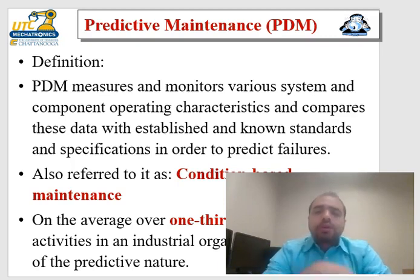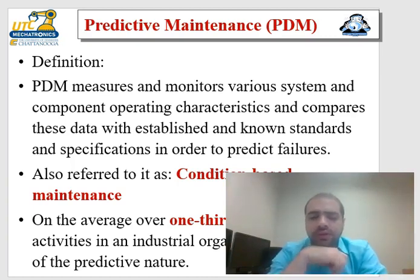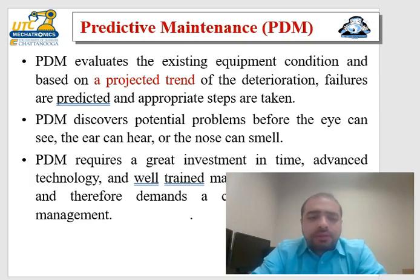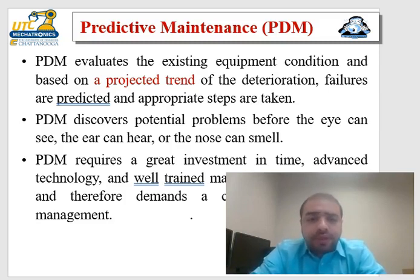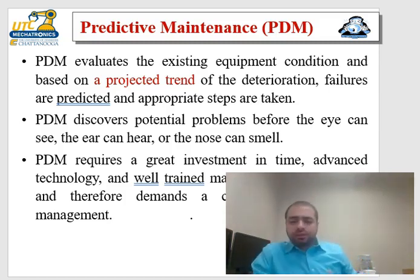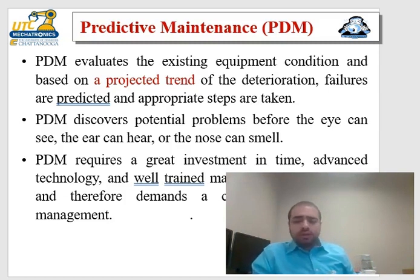On average, one third of all maintenance activities in an industrial organization should be of the predictive nature, because it saves a lot of money if you can predict a failure before it takes place. It's mostly applicable to big and expensive machinery, like high horsepower motors or pumps for oil wells. PDM evaluates the existing equipment condition and based on projected deterioration trends, failures are predicted before the eye can see, the ear can hear, or the nose can smell them.